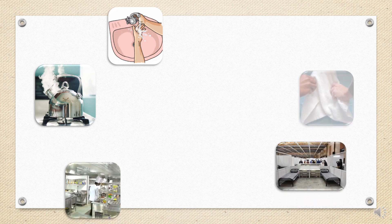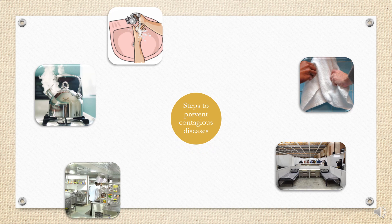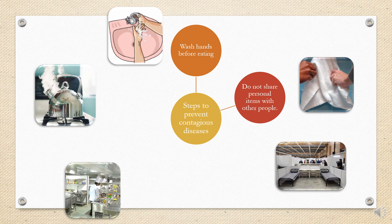Can you guess what this is? This is the step to prevent contagious disease. The first one: wash hands before eating. But now, I know we need to wash our hands every time. We need to wash our hands every time we go out. Keep our hygiene. It's important. Next, do not share personal items with other people, because we don't know that people might have virus or bacteria that can infect you. So don't share. I have my own, you have your own.